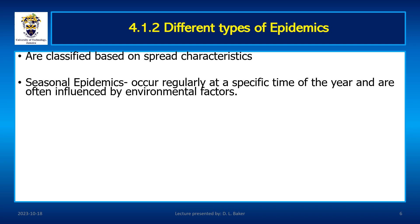Another type is seasonal epidemics. As the name suggests, they occur during particular seasons. Diseases such as diarrhea and dengue fever are more common during summer and rainy seasons, while influenza, exacerbation of asthma, and pneumonia occur more readily during the winter season.